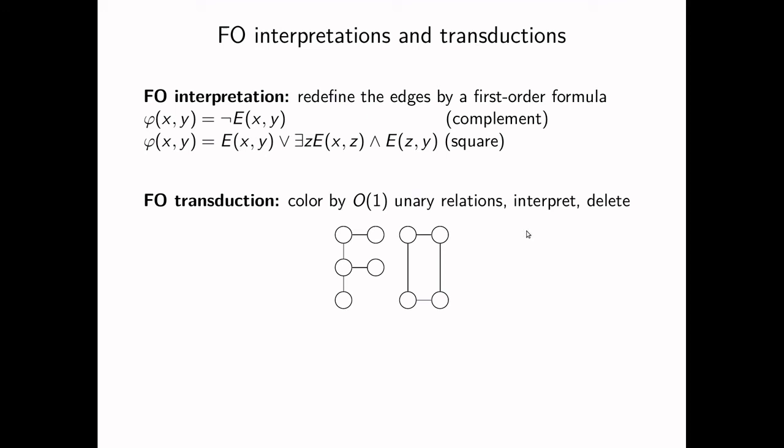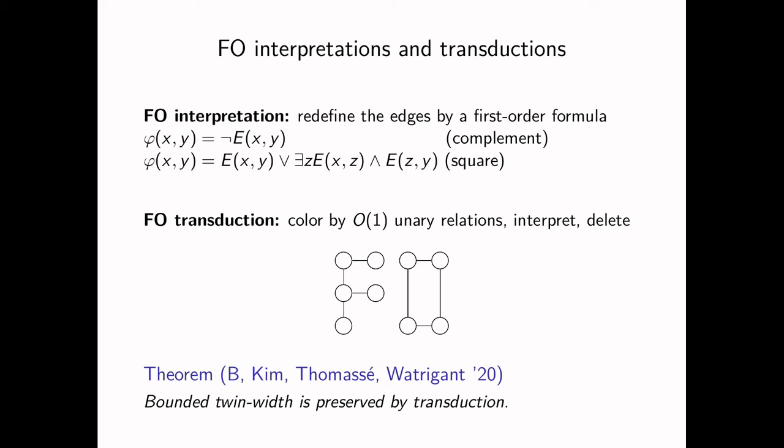On top of that, I want to define FO interpretations and FO transductions. An FO interpretation is just a way to redefine the edge set by means of a first-order formula. For instance, you can say now there is an edge between x and y if there was no edge between x and y—that would be the complement of your graph. But you can also get the square with the first-order formula by saying there is an edge between x and y if there was an edge between x and y or if there is a common neighbor to x and y.